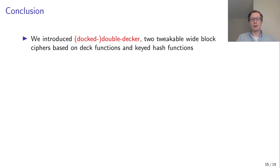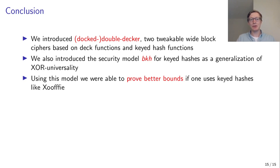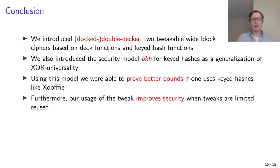In conclusion, we introduced two double-deckers, which are tweakable wide block ciphers based on DECK functions and keyed hash functions. We introduced a new security model, BKH, for keyed hashes, which is a generalization of the more commonly used XR-universality, and we used this model to prove better bounds for specific keyed hashes like Xoofff. Finally, our usage of the tweak improves security in situations where tweaks are used with limited reuse. Thank you for your attention.